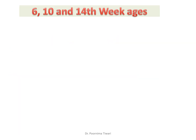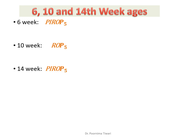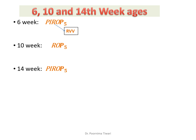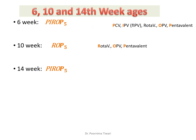The next ages for vaccination are 6, 10, and 14 weeks of age. At 6 weeks, the mnemonic is 'Period of 5': PCV, IPV, Rotavirus, OPV, and Pentavalent. At 10 weeks, the mnemonic is 'ROB 5': Rotavirus, OPV, and Pentavalent.